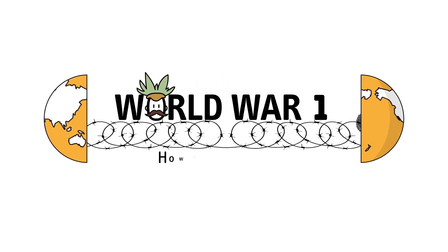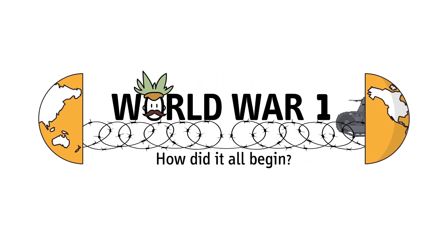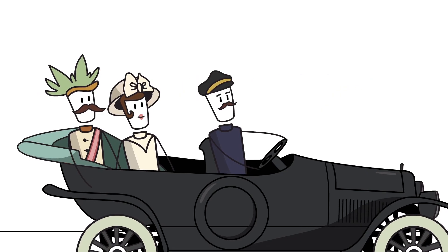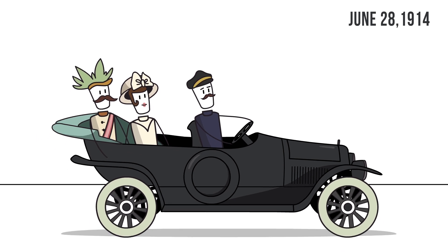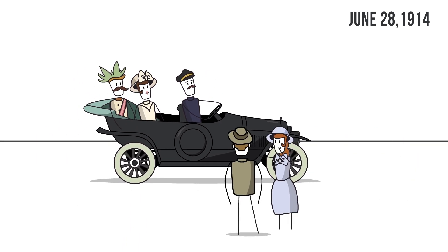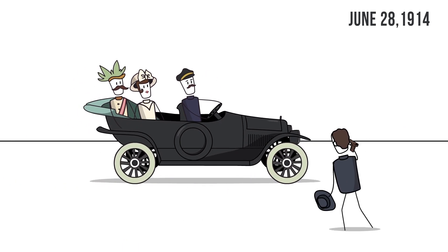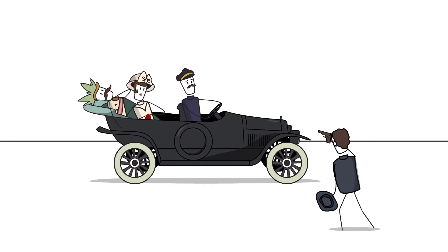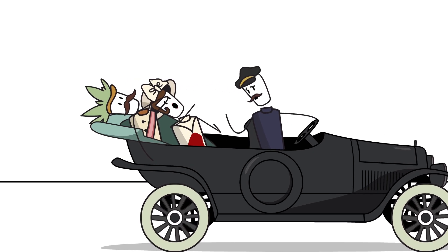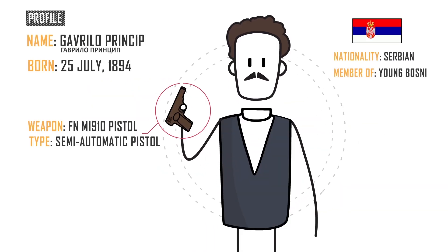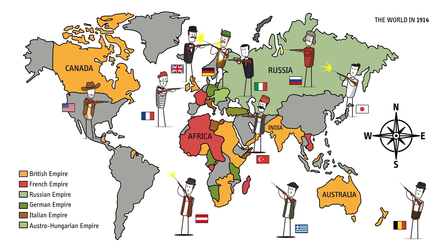World War One. How did it all begin? Well, on June 28, 1914, Austrian Archduke Franz Ferdinand was assassinated by Gavrilo Princip, a Serbian nationalist. And World War One broke out.